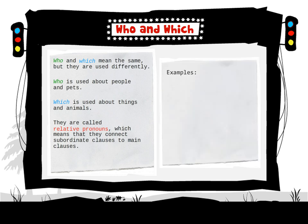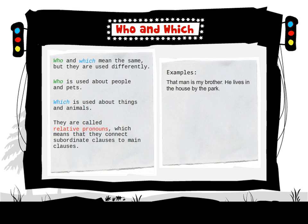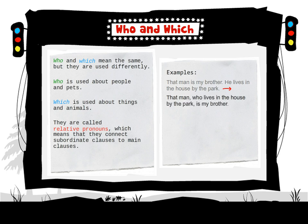For example: 'That man is my brother. He lives in the house by the park.' These two sentences combine into: 'That man, who lives in the house by the park, is my brother.'